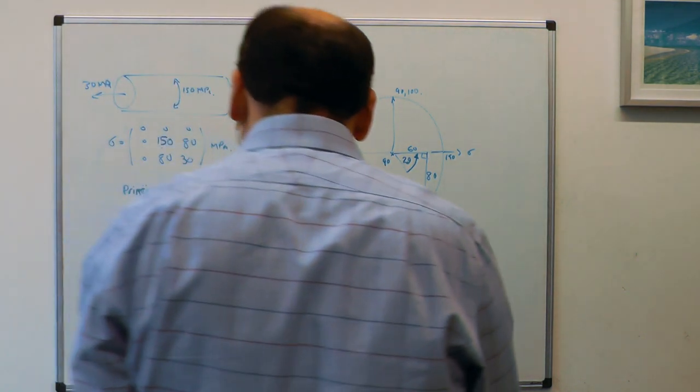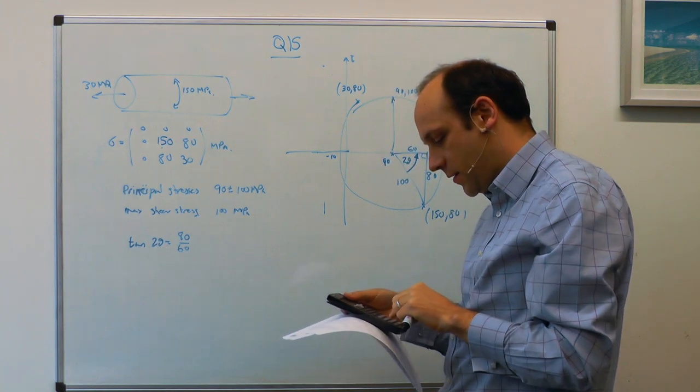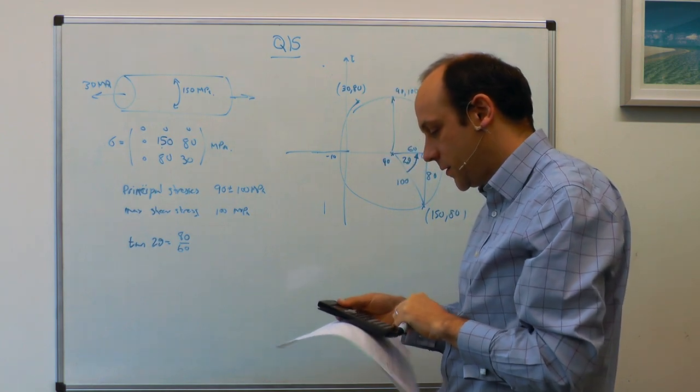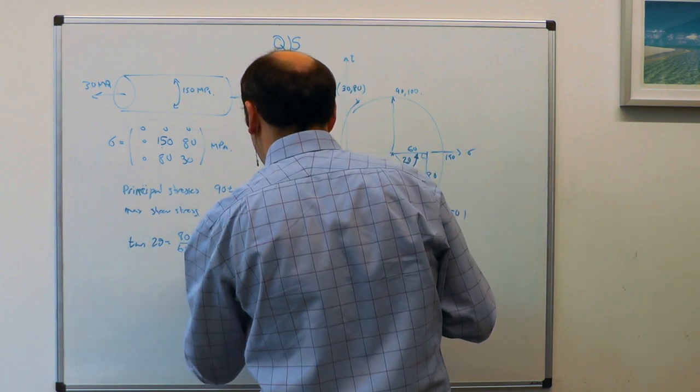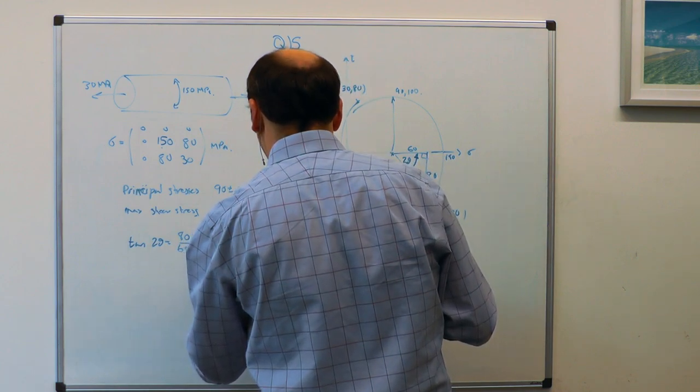If we get a calculator, then if I do inverse tan of 4 thirds, then I get 2 theta is 53.1 degrees.